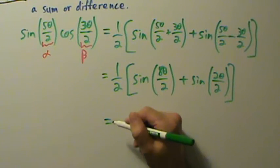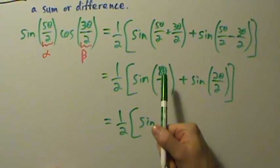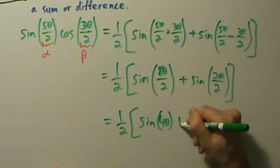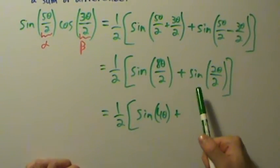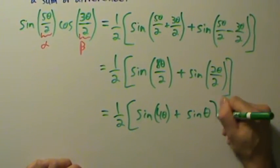And luckily we can simplify a little more, so then we have one-half times sine of 8θ over 2, which is just 4θ, and then plus the sine of 2θ over 2, which is just sine of θ.